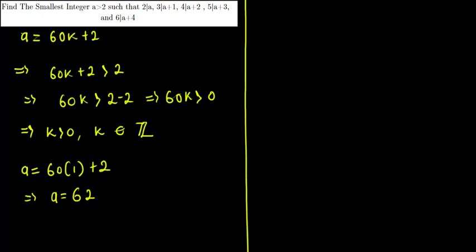Verification: 2 divides 62 ✓; 3 divides 63 ✓; 4 divides 64 ✓; 5 divides 65 ✓; 6 divides 66 ✓. So the smallest integer is confirmed to be 62.